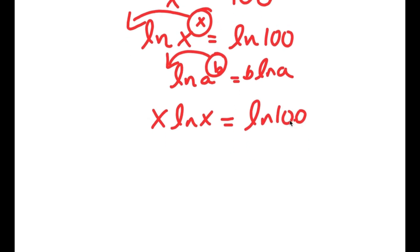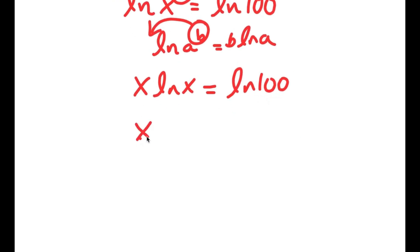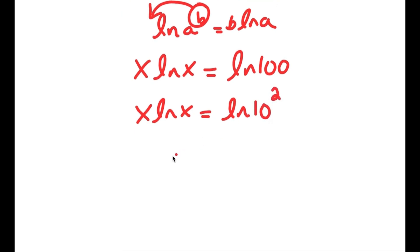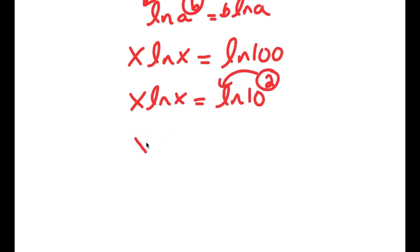Now, ln 100 is the same thing as ln of 10 squared. So I get x times ln x is equal to ln 10 squared. And again, I can move 2 to the front, so I get x times ln x is equal to 2 times ln 10.